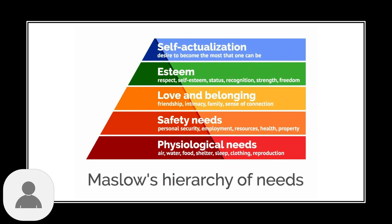Maslow's hierarchy of needs presents five levels of human requirements, beginning with basic physiological needs and progressing through safety, love and belonging, and esteem to ultimately reach self-actualization. This framework helps us understand how meeting basic needs creates the foundation for higher-level development and learning.